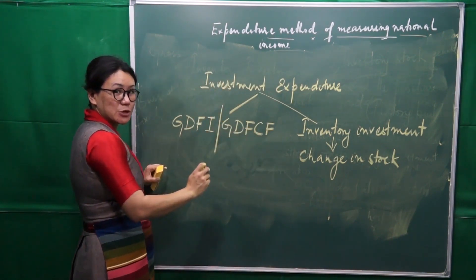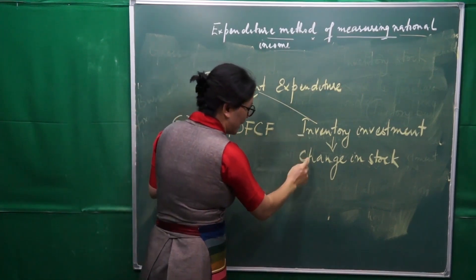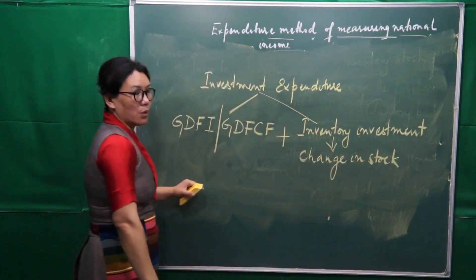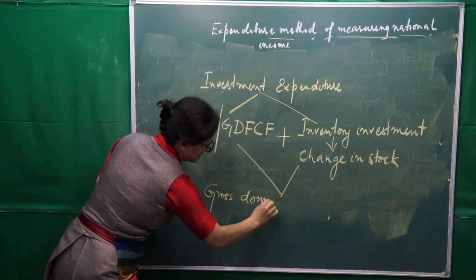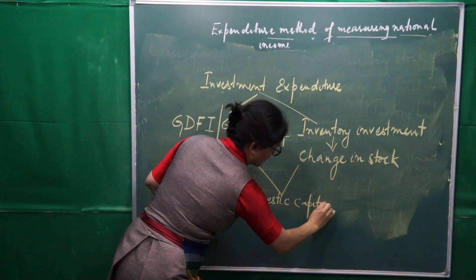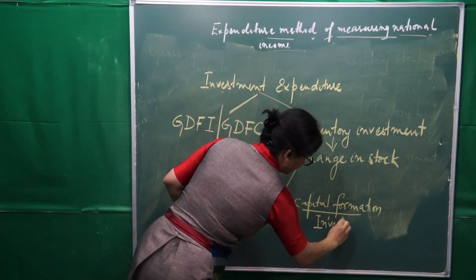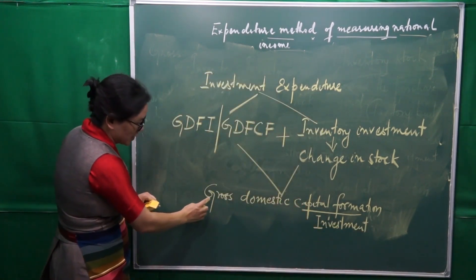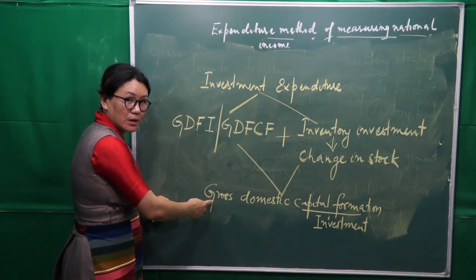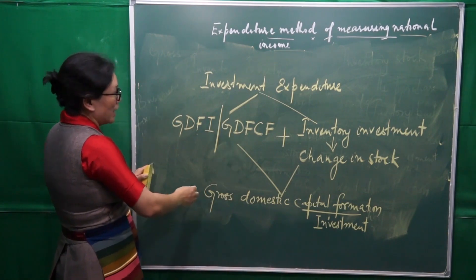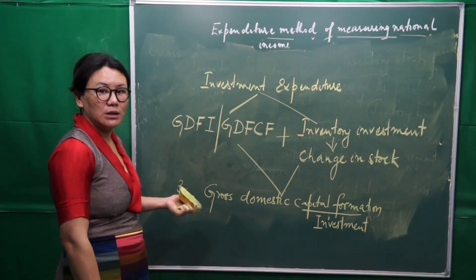We have two categories of investment expenditure: Gross Domestic Fixed Investment (Gross Domestic Fixed Capital Formation) plus Change in Stock. The sum of these two gives us Gross Domestic Capital Formation. So the third classification of final expenditure is Gross Domestic Capital Formation.